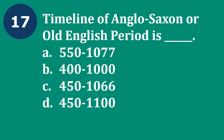Question 17: Timeline of Anglo-Saxon or Old English period is — A. 550–1077, B. 400–1000, C. 450–1066, D. 450–1100. The correct answer is C — 450–1066.